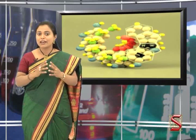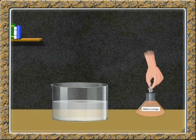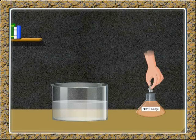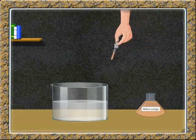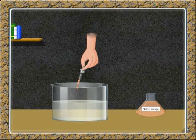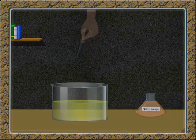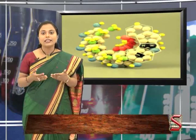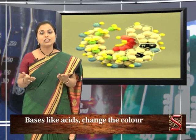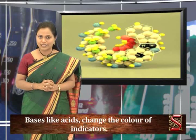Let's have a close look at another indicator — methyl orange. Take a solution and add methyl orange into it. The orange colour of methyl orange changes to yellow. Thus, we can say that bases, like acids, change the colour of indicators.